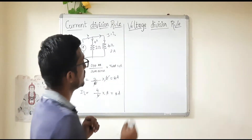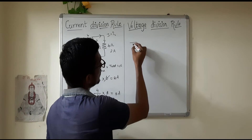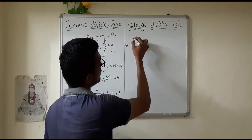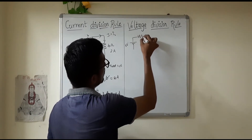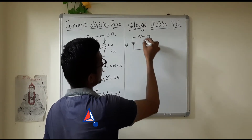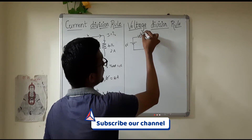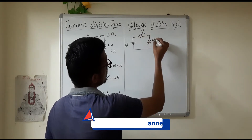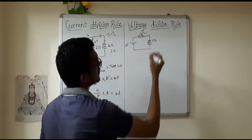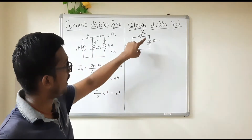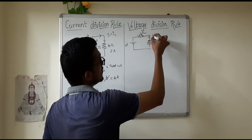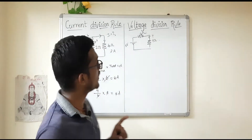Now, if you want to see the voltage division rule — let's take a 6 volt source. There are two resistances: one is 3 ohm and the other is 9 ohm. If you want to find the voltage drop across the 9 ohm resistance, you will use the voltage division rule.